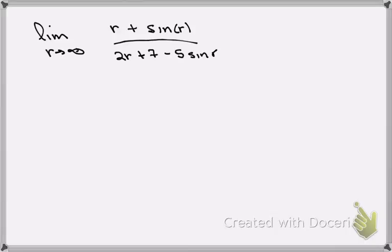If you look at the denominator, the term that's going to be most affected by r going to infinity is going to be r. So I'm going to divide every term by r.